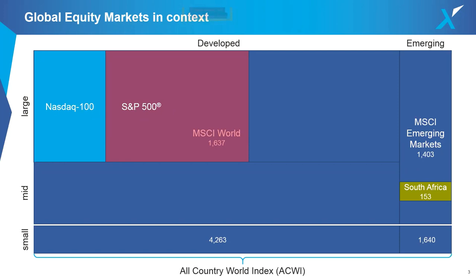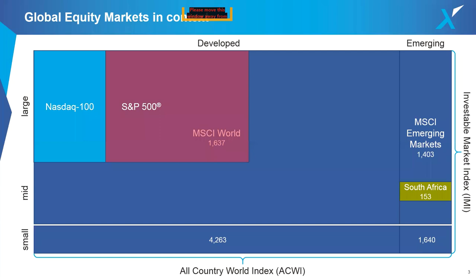When you combine large, mid, and small-cap companies together, MSCI adds the 'Investable Market Index' or IMI suffix to the index name. In total, across the entire investable equity universe, there are close to 9,000 stocks in the All Country World Investable Market Index. One question you should ask yourself is: where do you even begin with so much choice — it's difficult enough picking from 153 stocks on the JSE, let alone 9,000 across different countries.